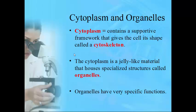Just like your skeleton gives your body its shape, the cytoskeleton gives the cell its generic shape. The cytoplasm is the jelly-like substance that all the small organs sit inside — think of a Jell-O mold with a piece of fruit suspended in it. The Jell-O is the cytoplasm, and the fruit suspended within it are the organelles. These organelles are structures with very specific functions, like small organs.